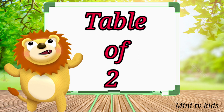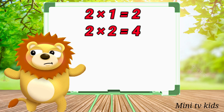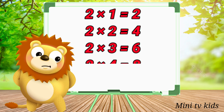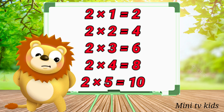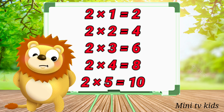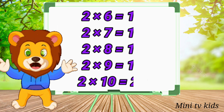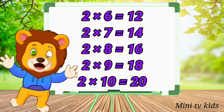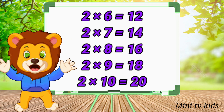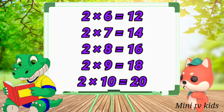Table of 2. 2 1's are 2, 2 2's are 4, 2 3's are 6, 2 4's are 8, 2 5's are 10, 2 6's are 12, 2 7's are 14, 2 8's are 16, 2 9's are 18, 2 10's are 20.